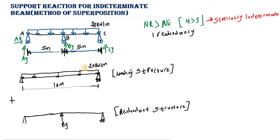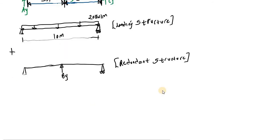The next step is to examine the deflection due to the loading structure and the deflection due to the redundant structure. We look at the vertical deflection at the redundant location — the roller support at B. We know the vertical deflection at point B must equal zero. So our compatibility equation is: deflection due to loading structure at 10 m plus deflection due to redundant structure at 10 m equals zero.